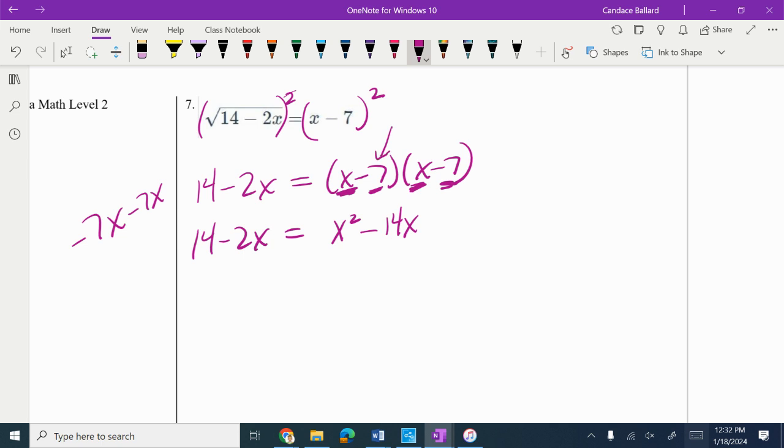Then we multiply negative 7 times negative 7, which gives us positive 49. Remember, all we just did there was a FOIL process.